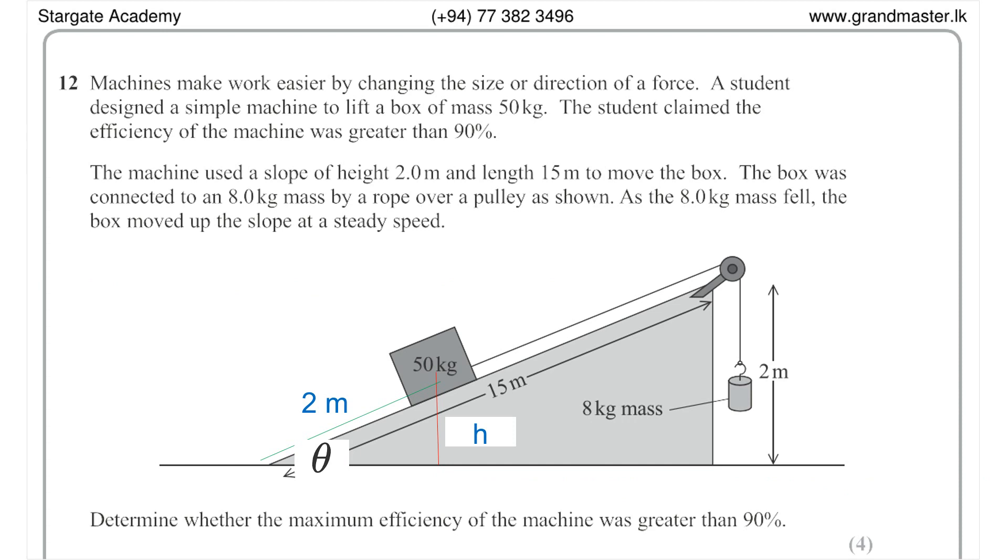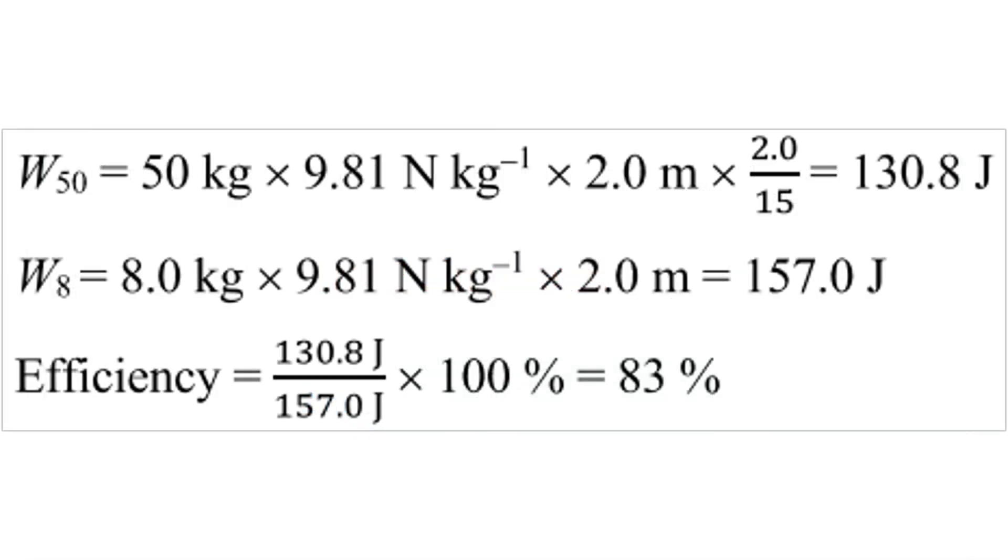change in vertical height should be taken into consideration, where it is calculated using 2 m times sin theta. Theta is the angle of the inclined plane. An example of the calculation should be as follows, and efficiency of the machine is less than 90% according to this calculation.